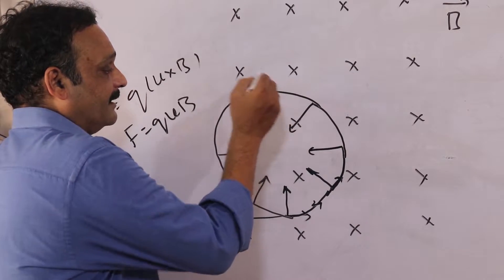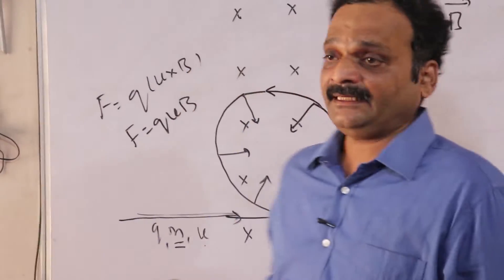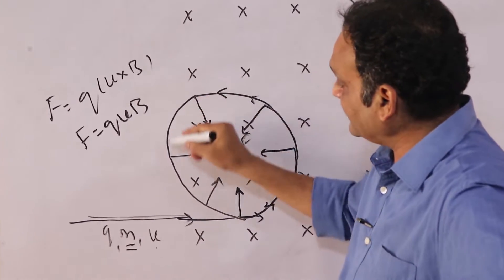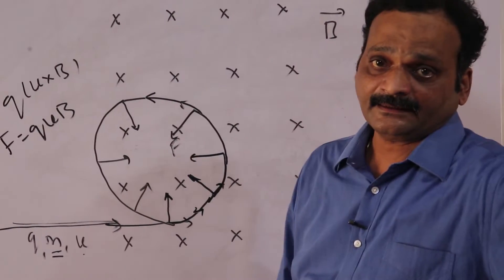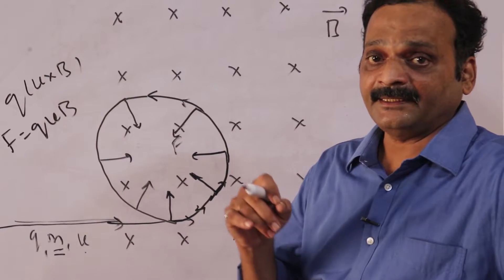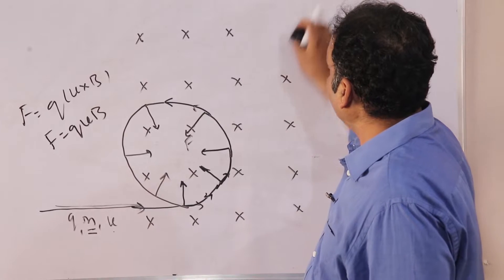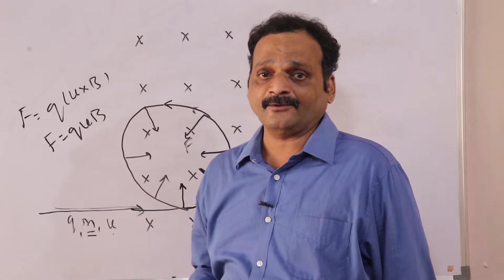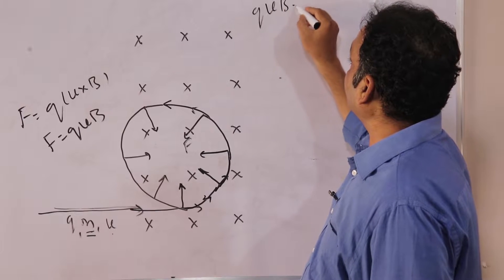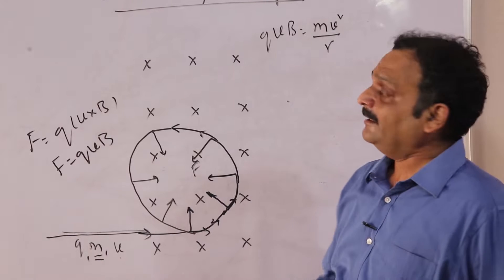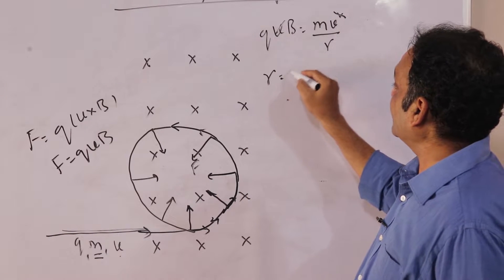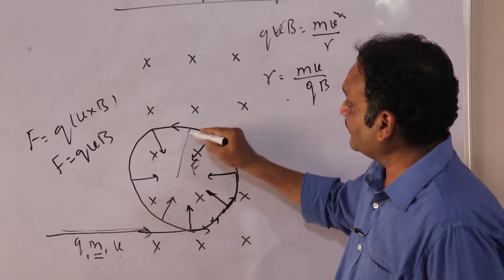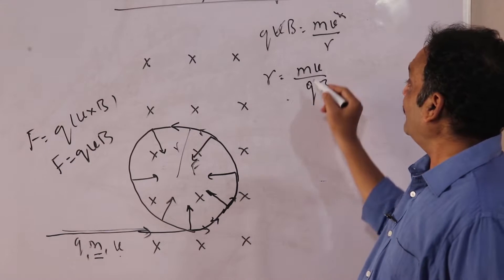The magnetic field bends the particle's path into a circle — that's why this topic is called circulating charges. Since force is always perpendicular to velocity, the path is circular. The force that comes to mind is centripetal force. Here, the magnetic force itself acts as the centripetal force: qvB = mv²/r. Simplifying, the radius of the circular path is r = mv/qB.